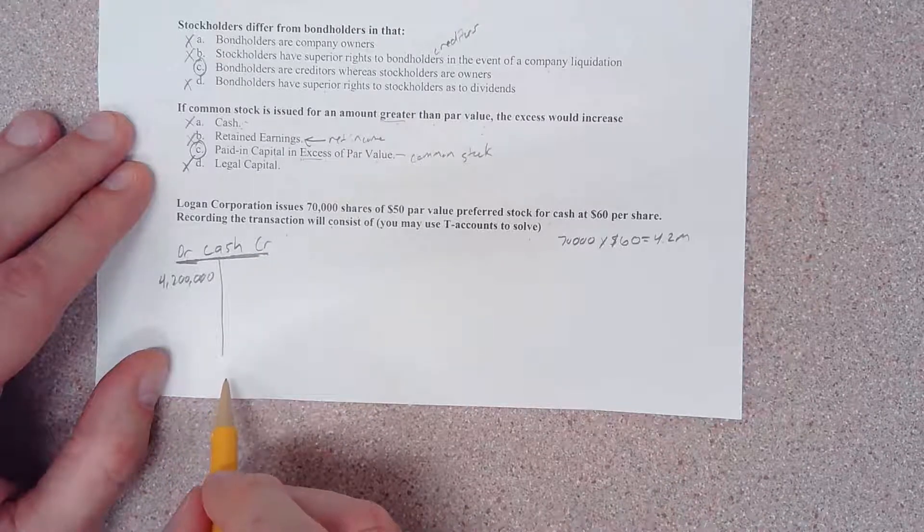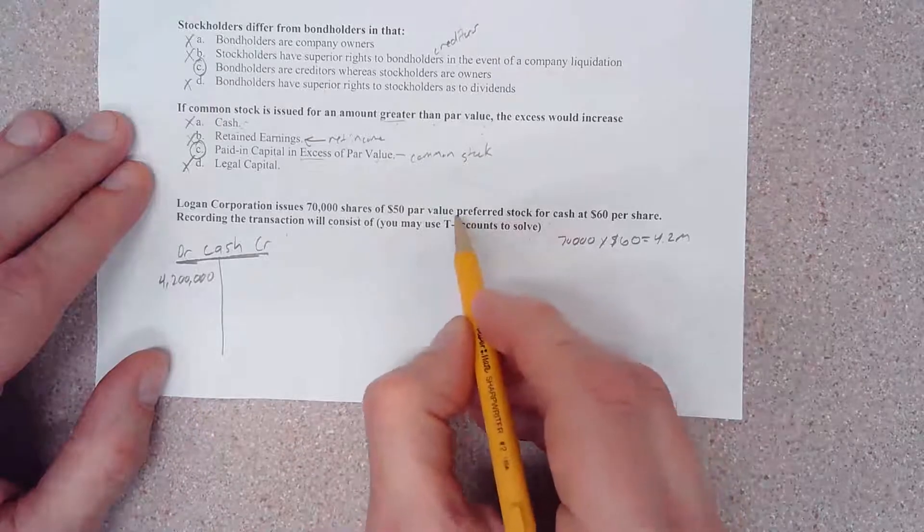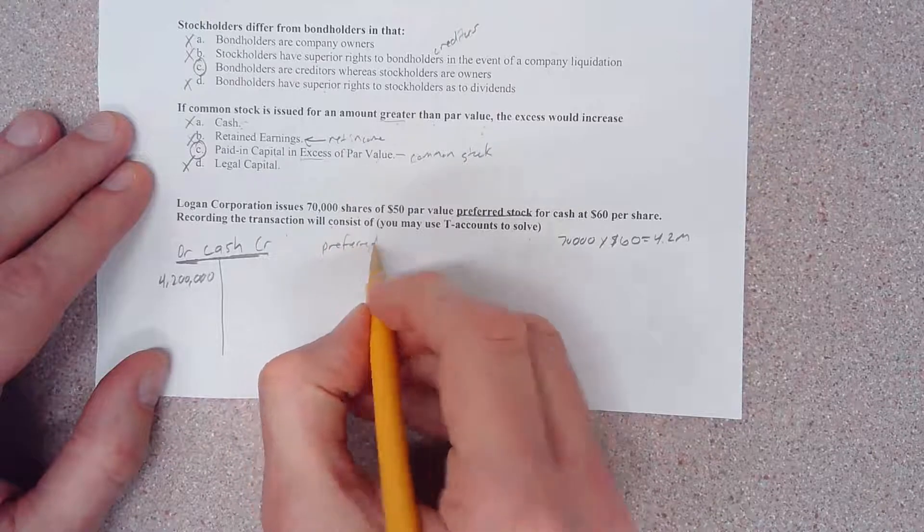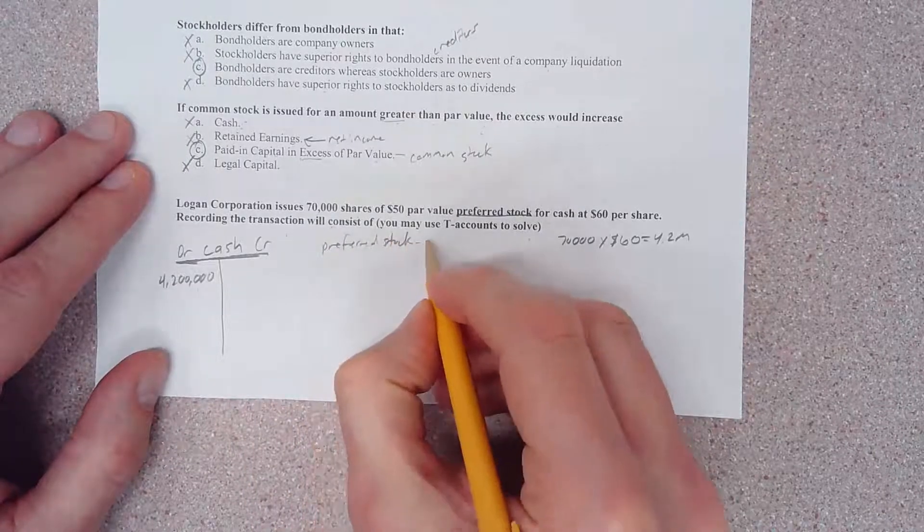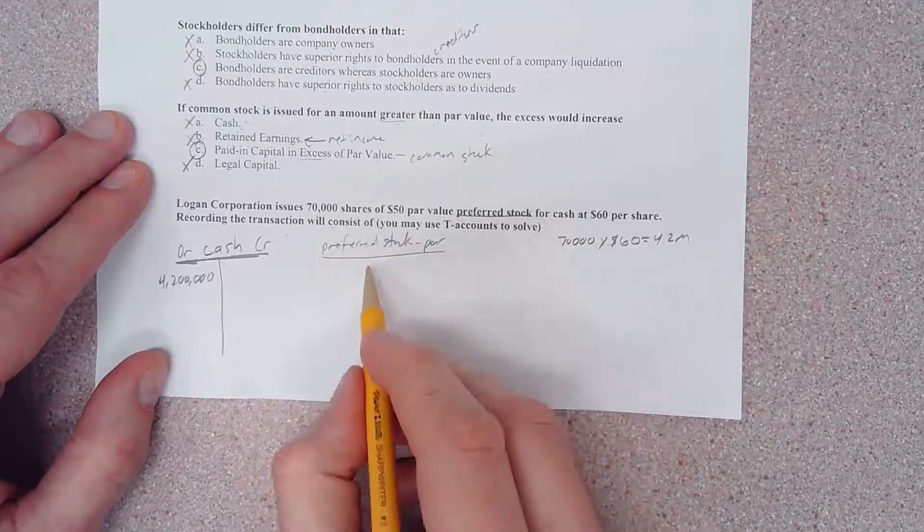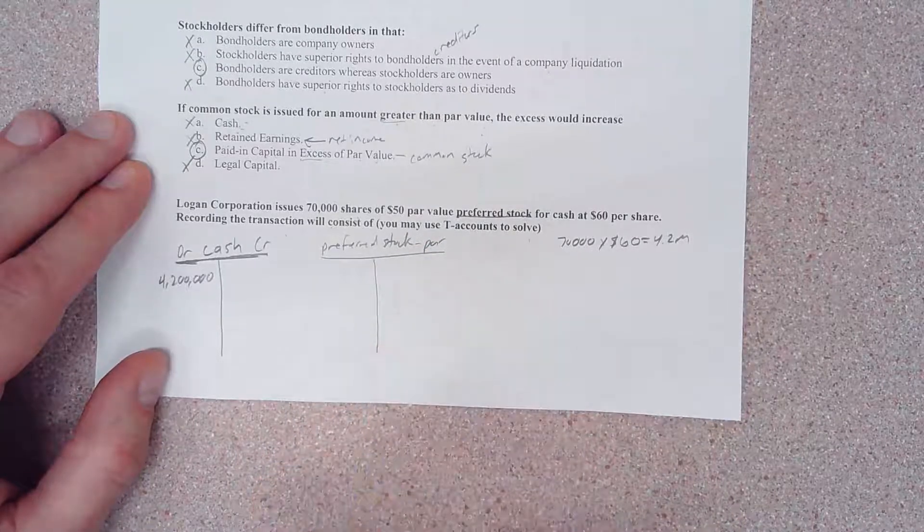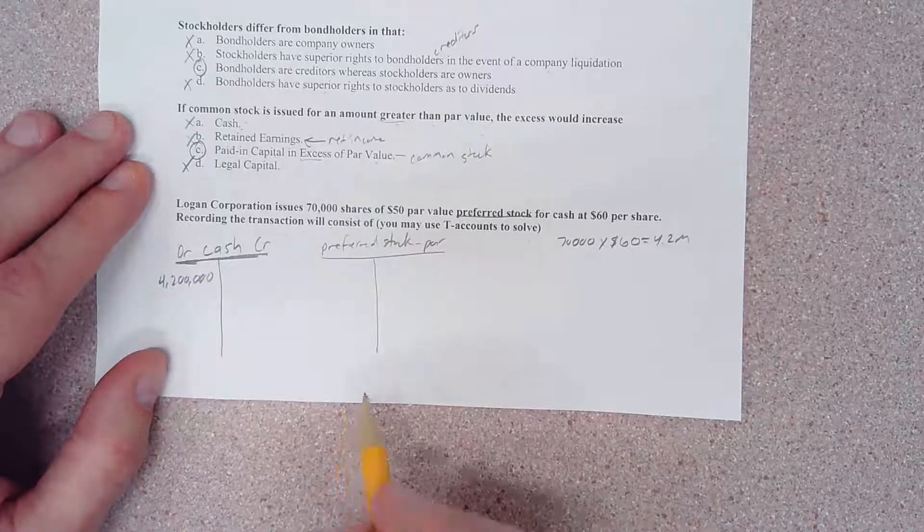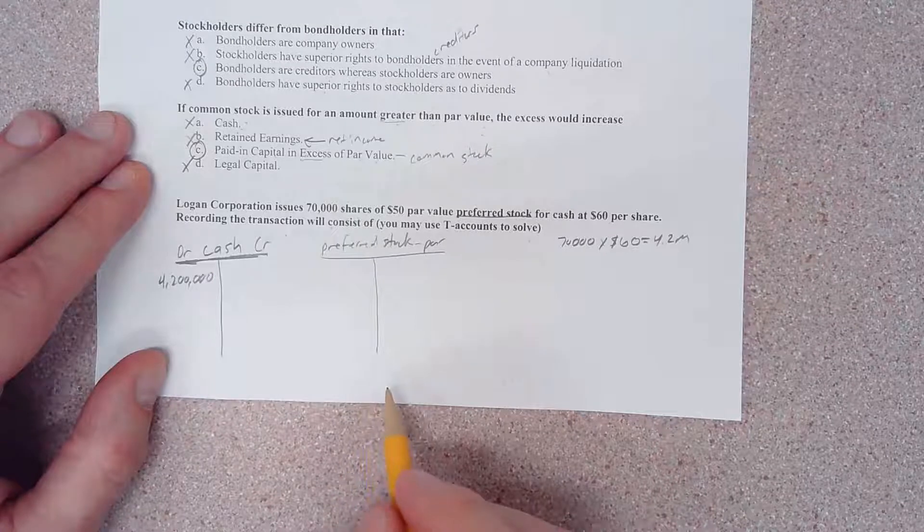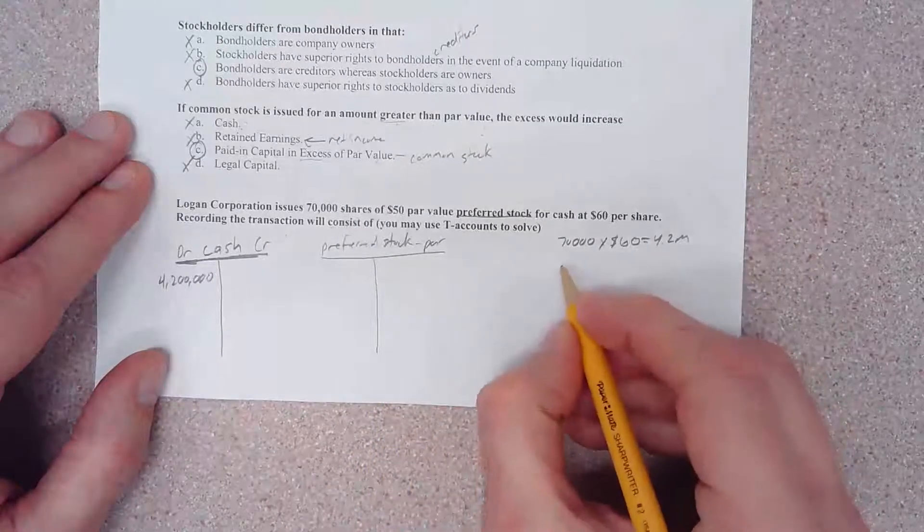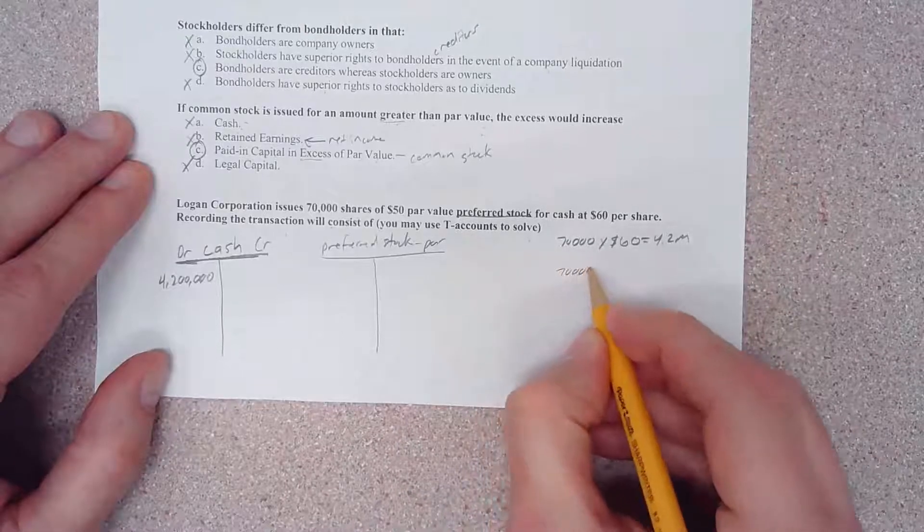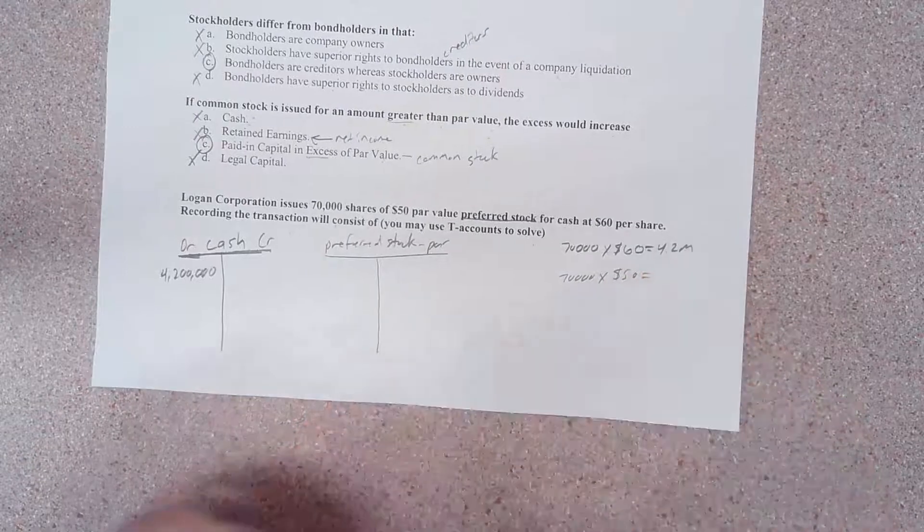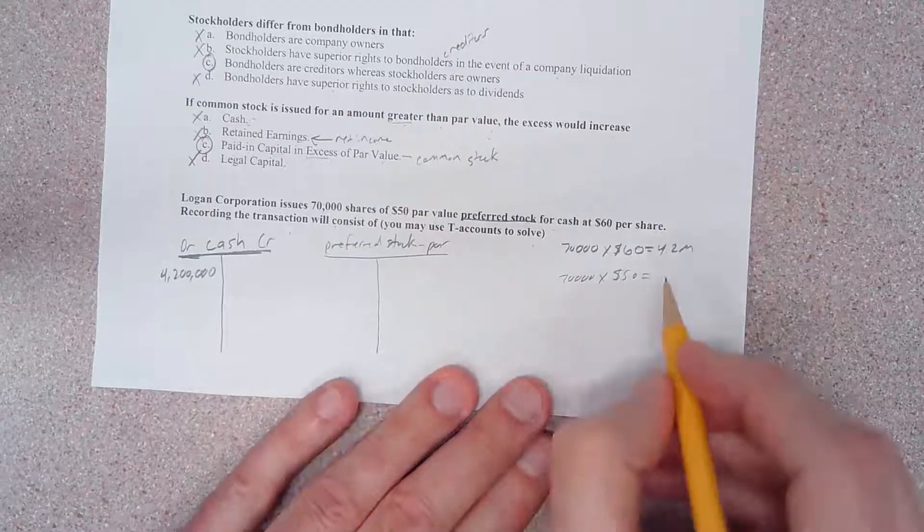We have another account here called preferred stock, or preferred stock par. Both paid-in capital accounts or stock accounts as well as retained earnings have normal credit balances. What we need to do here is take this same 70,000 number of shares.